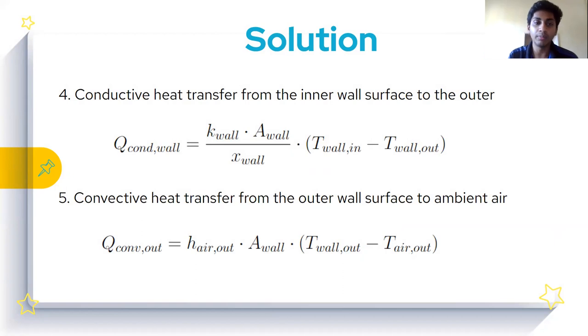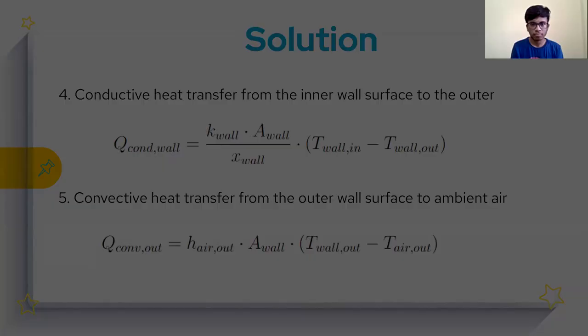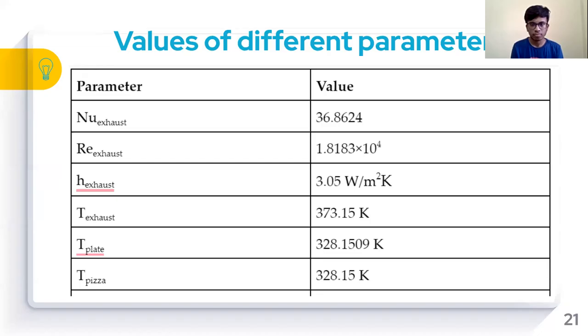Finally, the heat will be transferred to the surroundings in the form of convection. For convection, the equation we use is Q_convection_outside equals h_air_out times area of the wall times delta T. These are the different parameters we used in our model calculation.